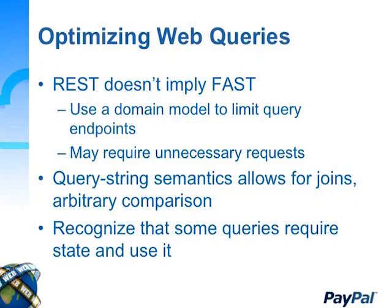Browsers are based around presentation, designed for browsing and not really thinking about querying, and they're bedeviled with endless legacy issues. Microsoft says 85% of the code in IE is there to account for people's bad HTML — not to format pages, but just to deal with errors in HTML. REST does not mean fast. REST is a big thing in the news, but it's not fast. Semantic means of accessing data does not improve performance. Using a domain model can limit the number of queries but may make some unnecessary requests. Query string semantics allows for joins and arbitrary comparisons. We should recognize that some queries require state and just deal with it.